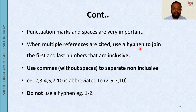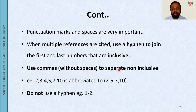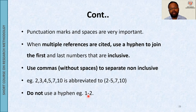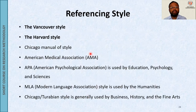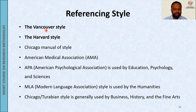When multiple references are cited, use a hyphen to join the first and last numbers that are inclusive. Use commas without space to separate non-inclusive references. Do not use a hyphen for immediate sequential numbers - you mention them as '1,2' not '1-2'.